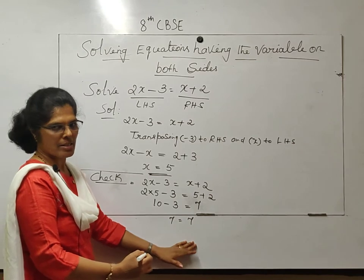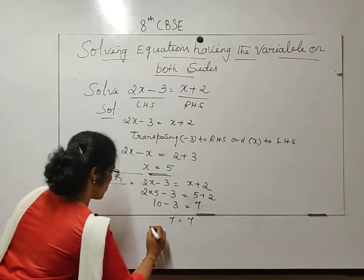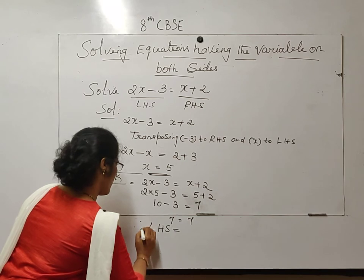So both sides, we got the same answer, that is 7. Therefore, LHS is equal to RHS.